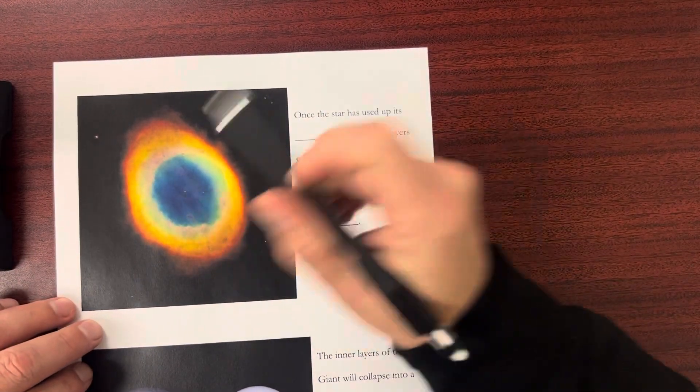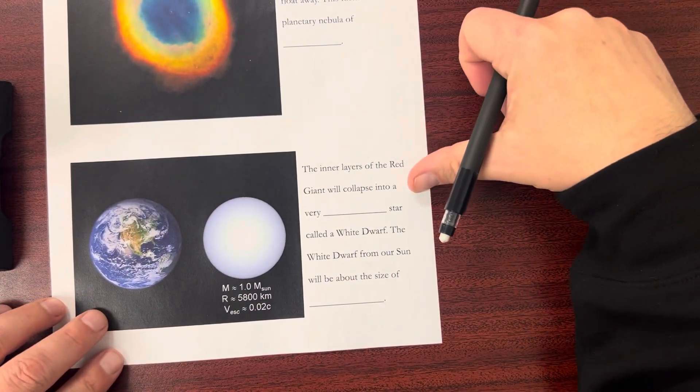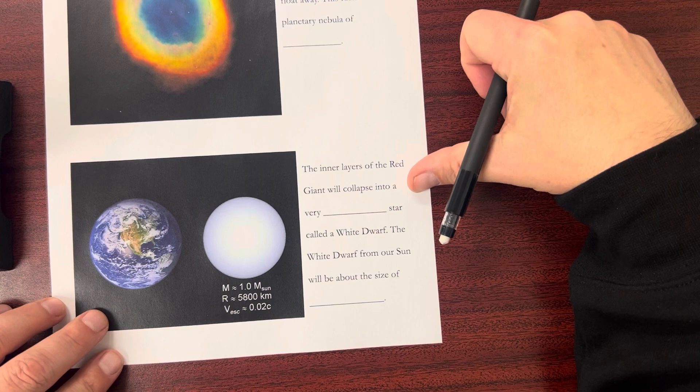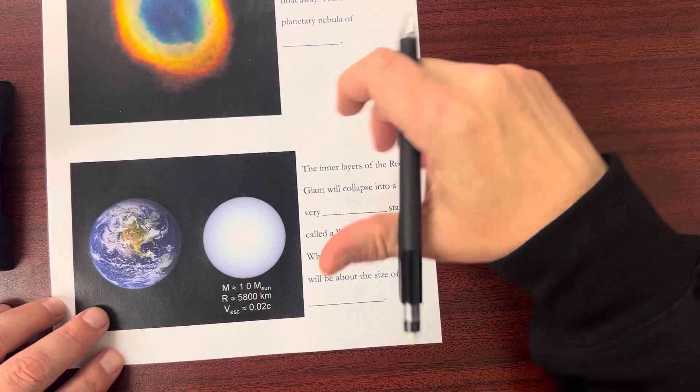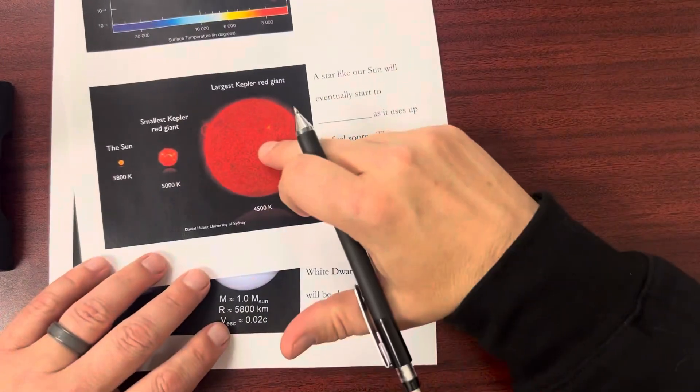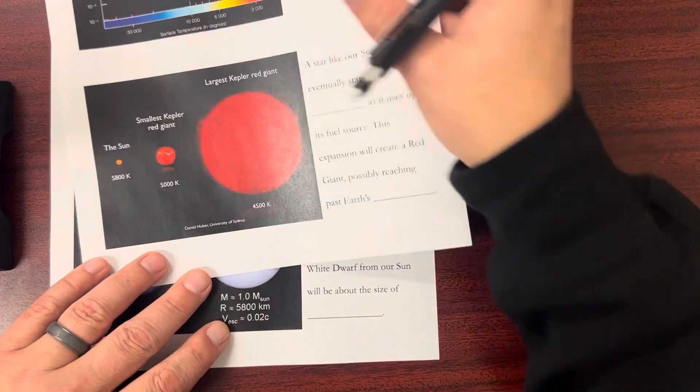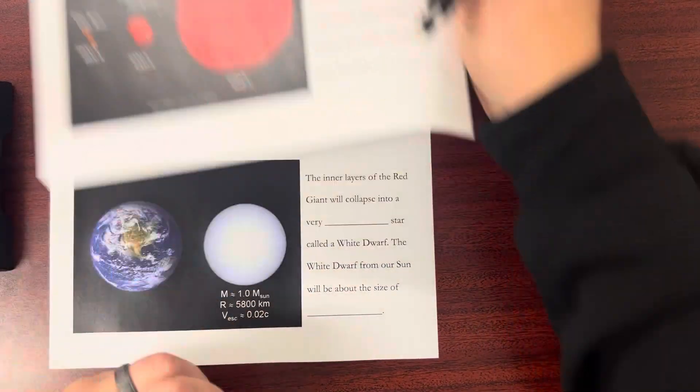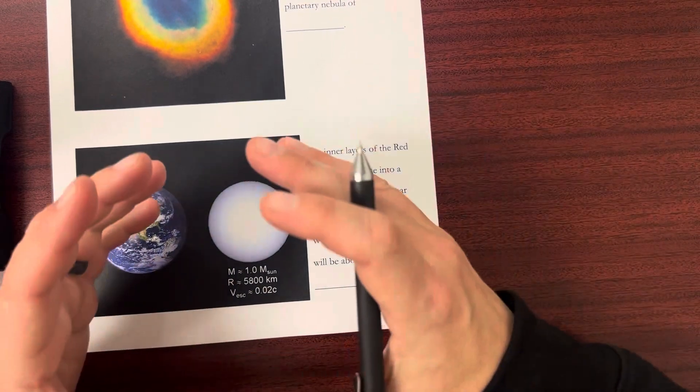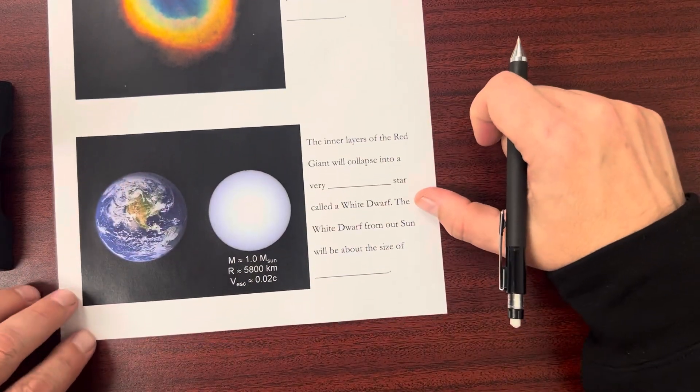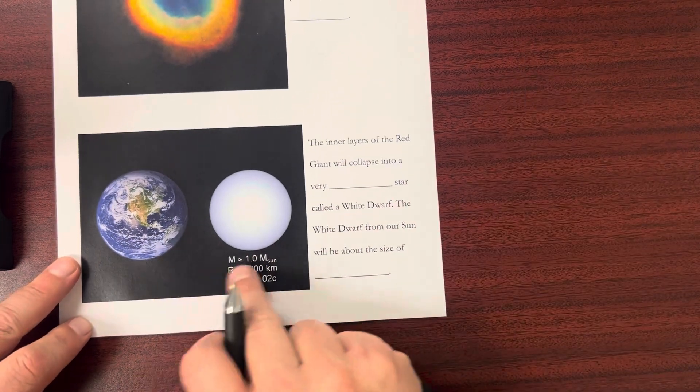Now we'll talk about what this is down here. The inner layers of the red giant will collapse into a very dense star called a white dwarf. That big red giant, much bigger than our sun, eventually the inside collapses down on itself into a white dwarf—very, very dense. The white dwarf from our sun will be about the size of Earth.